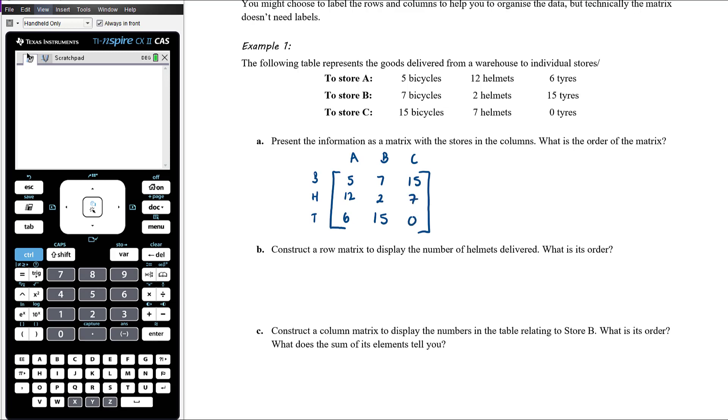It says, present the information as a matrix with the stores in the columns. We've done that. What is the order of the matrix? This is a three by three matrix.